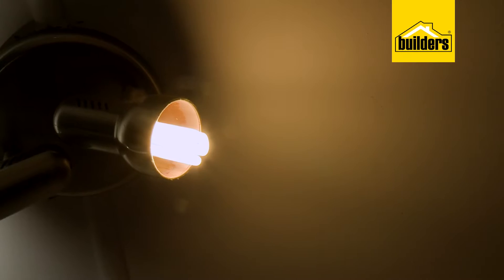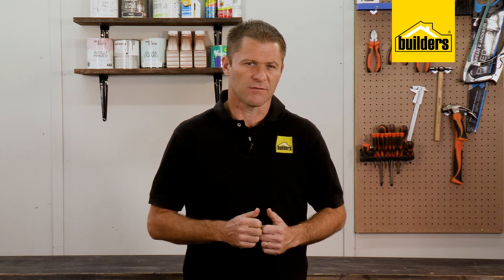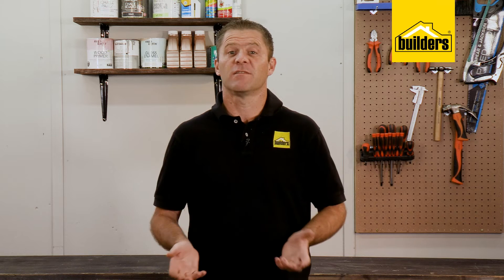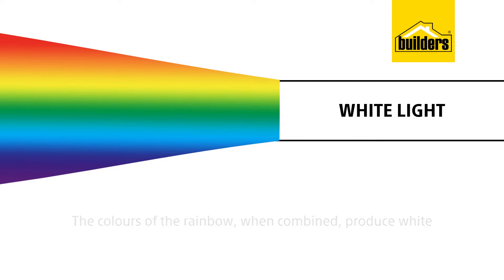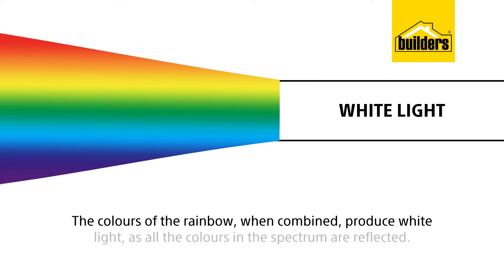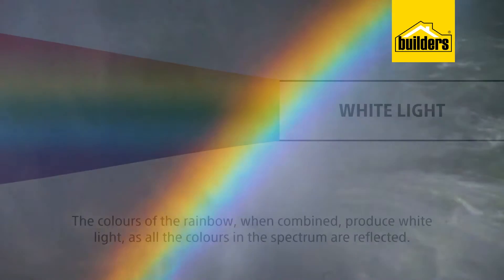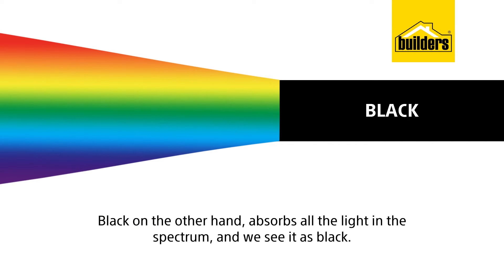Either natural sunlight or artificial lighting. Now this is a little tricky to show you, so I'll try and explain it as best I can. The colors of the rainbow when combined produce white light, as all the colors on the spectrum are reflected — a rainbow is a visual representation of this. Black, on the other hand, absorbs all the light in the spectrum, and we see it as black.